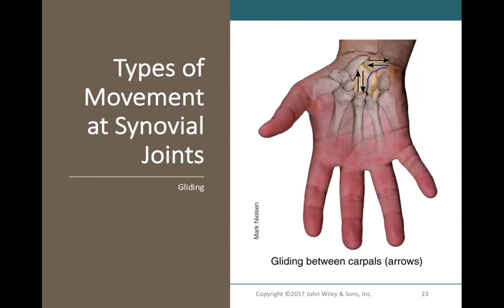Gliding movements refer to the sliding of bones past each other — flat surfaces on our bones sliding past. We see a lot of these occur in the carpal bones. In the carpal region there are eight bones, all very closely associated with each other, and as our wrist moves these bones slide past each other in different directions. That's really all you need to know about gliding movements.